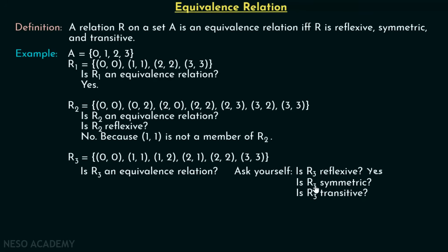Is R3 symmetric? For the pair (1,2), we must have (2,1) in the relation. You can see that (2,1) is indeed there. Therefore, this relation is symmetric.